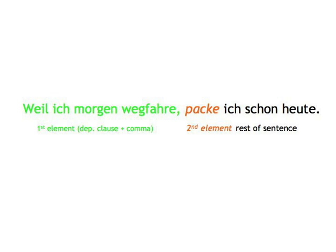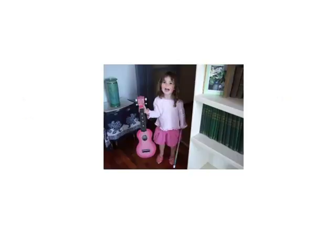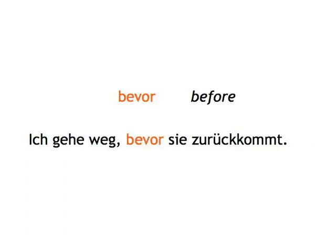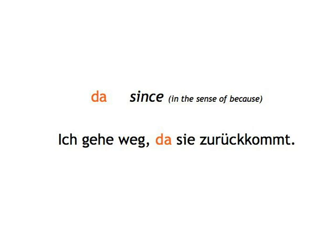Now you'll be prepared should you ever meet a German toddler with lots of why, when, or how questions. Let's now have a look at some more subordinating conjunctions. Bis — until: Ich bleibe zu Hause, bis sie zurückkommt. I'll stay at home until she comes back. Bevor — before: Ich gehe weg, bevor sie zurückkommt. I'll go away before she comes back. Da — since, in the sense of because: Ich gehe weg, da sie zurückkommt. I'm going away because she's coming back.